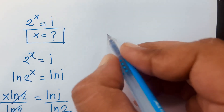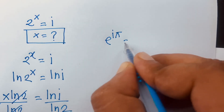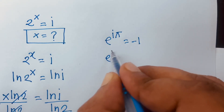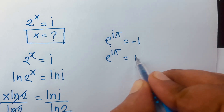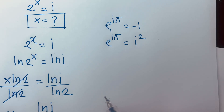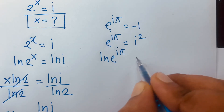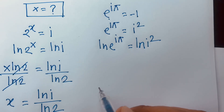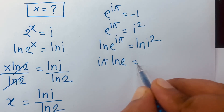First of all, we use Euler's rule: e to the power i pi is equal to minus 1. We know that i squared is equal to minus 1, so e to the power i pi is equal to i squared. Taking ln of both sides: ln of e to the power i pi is equal to ln of i squared, which gives i pi times ln e is equal to 2 ln i.